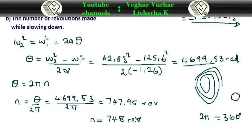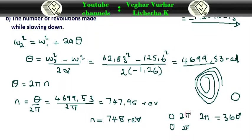Dividing by 2π gives us the number of revolutions. You can see that one rotation is 2π, another rotation adds another 2π, and if there is a half rotation that is π — they all add up to the total angle. We divide by 2π to convert that total angle into the number of complete revolutions.